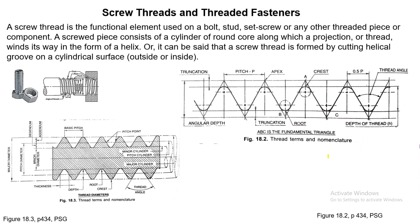Welcome back to a lecture on machine drawing. Today I will be talking about screw threads and threaded fasteners. Most of the mechanical machines you see contain screws, which are basically used for fastening two parts together. A screw thread is the functional element used on a bolt, stud, set screw, or any other threaded piece or component.